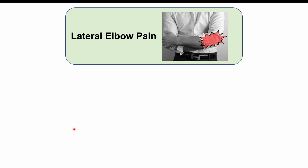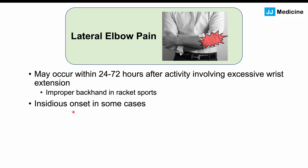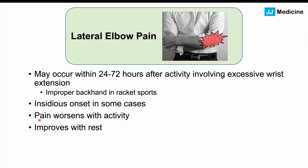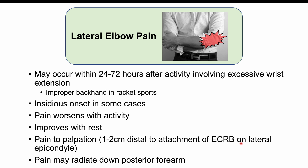The hallmark finding of lateral epicondylitis is lateral elbow pain, which most often occurs within 24 to 72 hours after activity involving excessive wrist extension. Onset may also be insidious — slowly increasing in severity over time. Pain worsens with activity and improves with rest. There is tenderness to palpation one to two centimeters distal to the attachment of the extensor carpi radialis brevis on the lateral epicondyle, and pain may radiate down the posterior forearm.